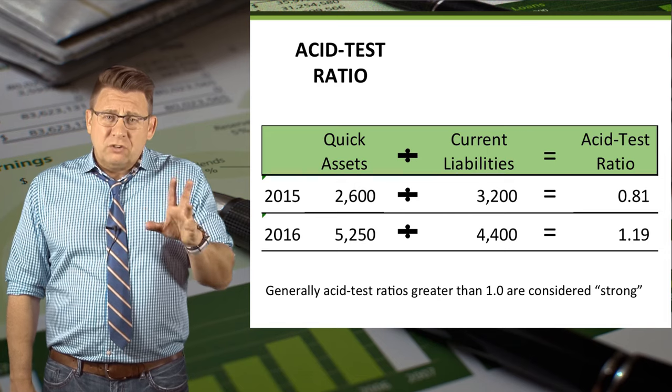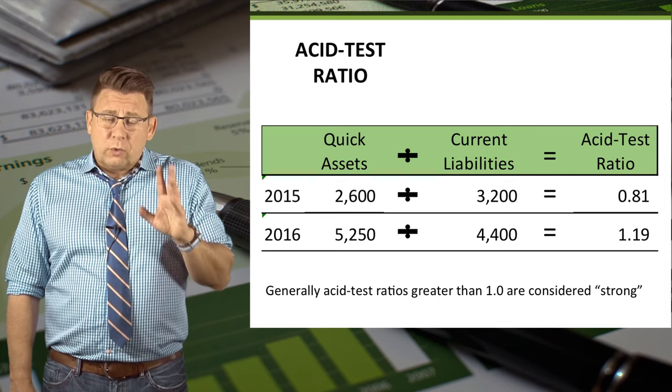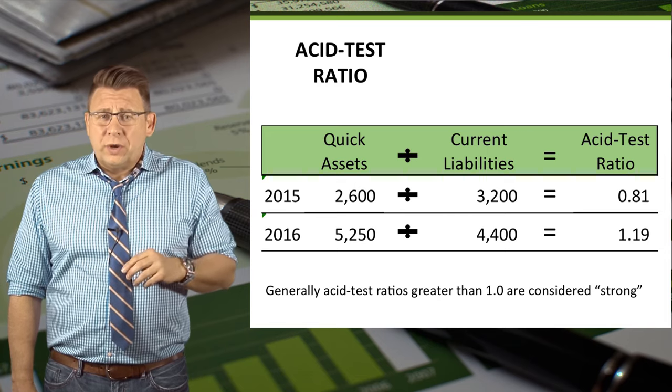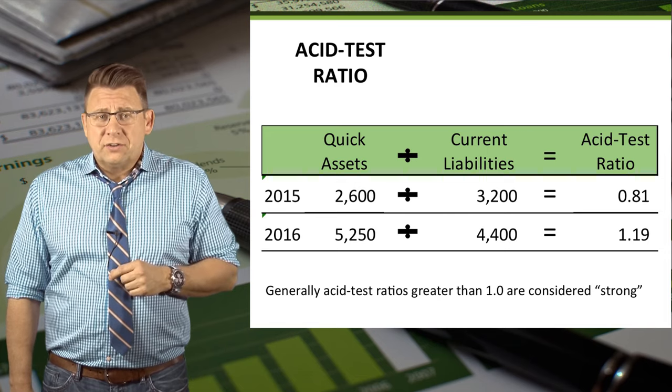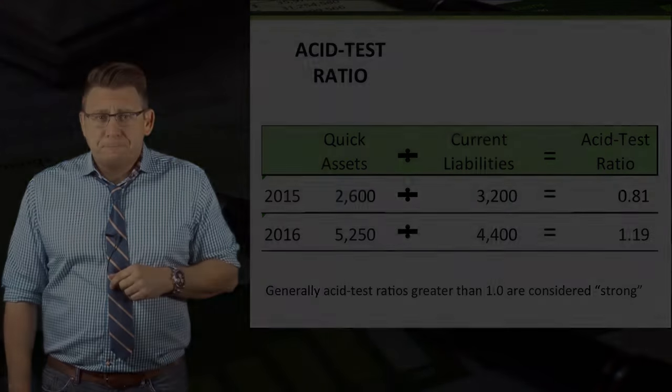Generally, ratios greater than 1.0 are considered strong.